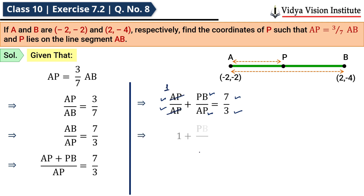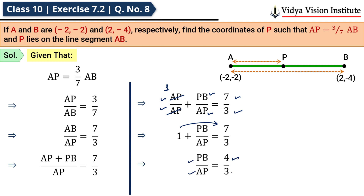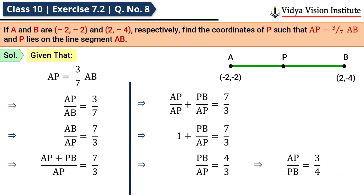This gives us 1 + PB/AP = 7/3. Moving 1 to the right-hand side: PB/AP = 7/3 − 1 = 4/3. Therefore AP:PB = 3:4. So point P divides the line segment AB in the ratio 3:4.